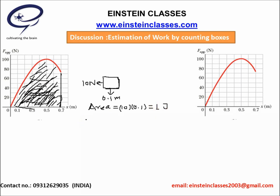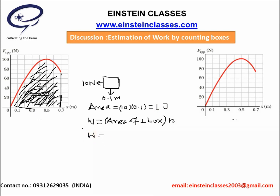To find the total work done, we count all boxes under the graph. There are 42 complete boxes, and the remaining incomplete boxes can be approximated as 6 to 7 complete boxes. So the area under the graph contains approximately 48 to 49 boxes. Since each box has an area of 1 Joule, the approximate work done is 48 to 49 Joule — approximately 48.5 Joule. Therefore, the work done by the force applied by the archer is approximately 48 to 49 Joule.